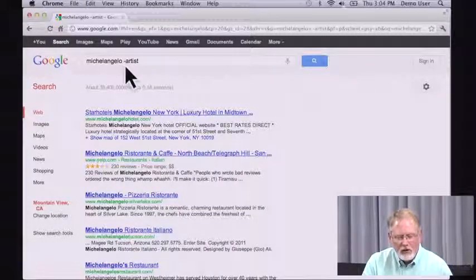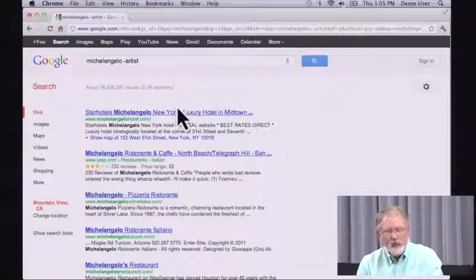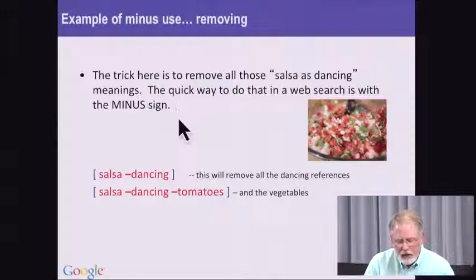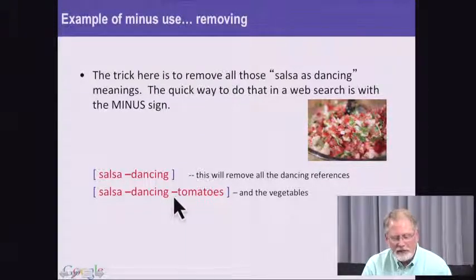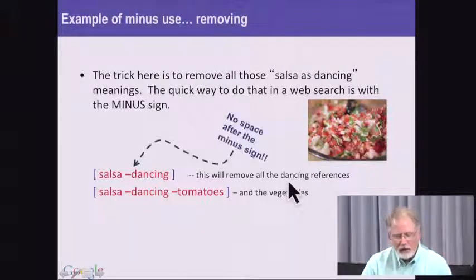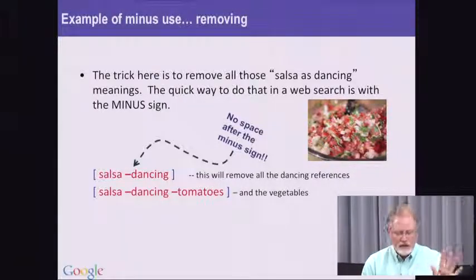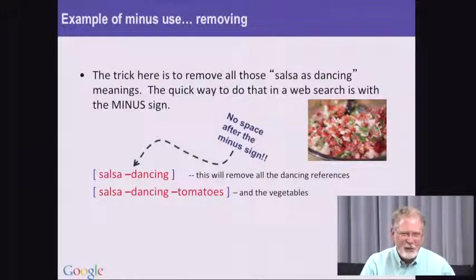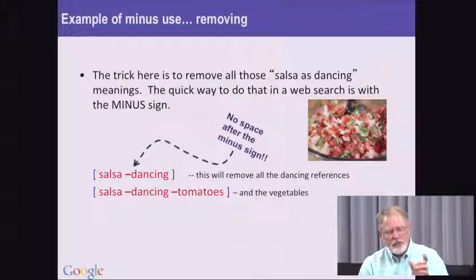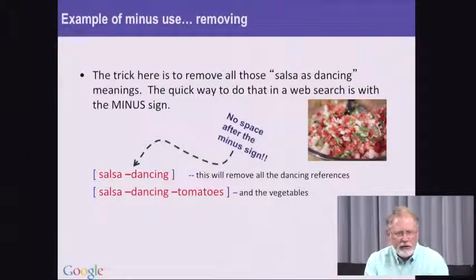In effect, what you're seeing is the removal of all those pages. It's important to notice that we need to not have a space between the minus sign and the term. If you put that space in there, you're just saying 'salsa dancing' and now you're emphasizing that term, which is probably not what you meant. So keep the minus sign really close to the term you're trying to exclude, and you'll get the effect you want.